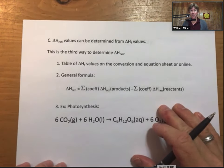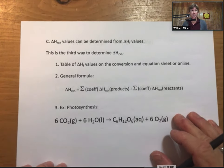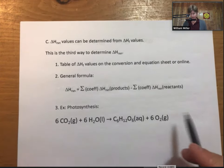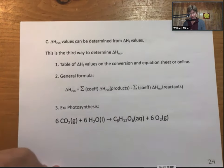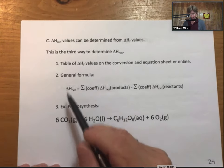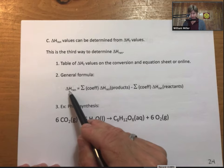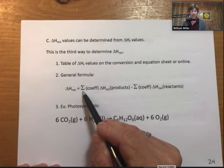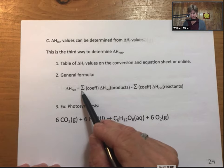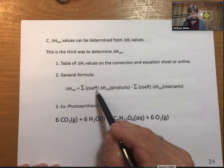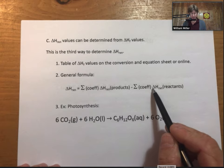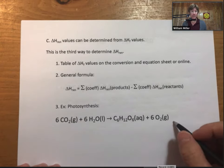So, delta H reactions can be determined from delta HF formation values. This is the third way to determine delta H reaction. We have that table of values that I showed you. And the general formula is that delta H reaction equals the sum. This is the Greek uppercase letter sigma, which means sum. Sum of coefficients times the delta H reaction of the products, minus the sum of the coefficients times the delta H reaction of the reactants. That's the general formula.